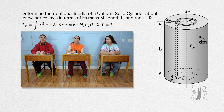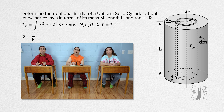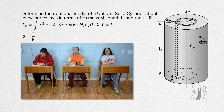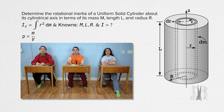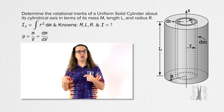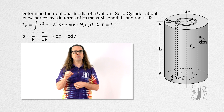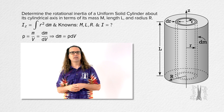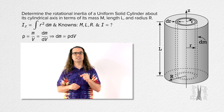Because the uniform solid cylinder and dm both have the same volumetric mass density, we start with volumetric mass density equals mass over volume. What is the volumetric mass density of dm equal to? The mass of dm is dm and the volume of dm — can we define that as dV? Yes, let's do that. We can solve for mass dm: it equals volumetric mass density times volume dV. Now we need to determine the volume of dV.